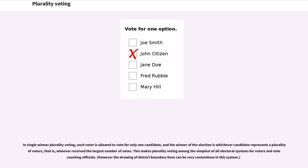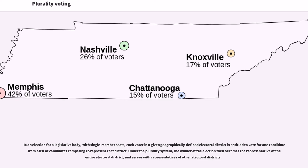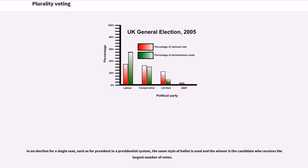This makes plurality voting among the simplest of all electoral systems for voters and vote-counting officials. However, the drawing of district boundary lines can be very contentious. In an election for a legislative body with single-member seats, each voter in a given electoral district votes for one candidate to represent that district, and the winner becomes the representative of the entire district. In an election for a single seat, such as for president, the winner is the candidate who receives the largest number of votes.